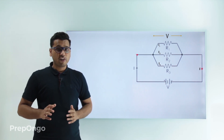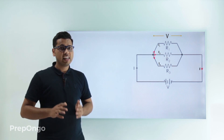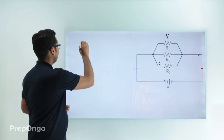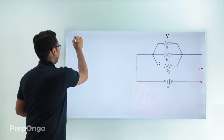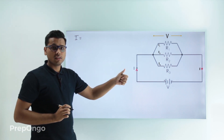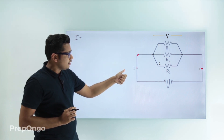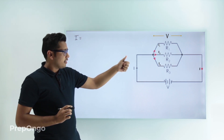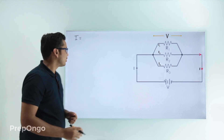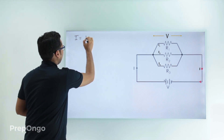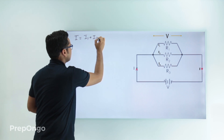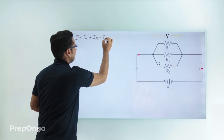Now let's find out how to calculate the equivalent resistance in this case. We can write that the total current I equals the sum of all the branch currents, because I breaks down into I1, I2, and I3, which then combine to form I again. So we can write: I = I1 + I2 + I3.